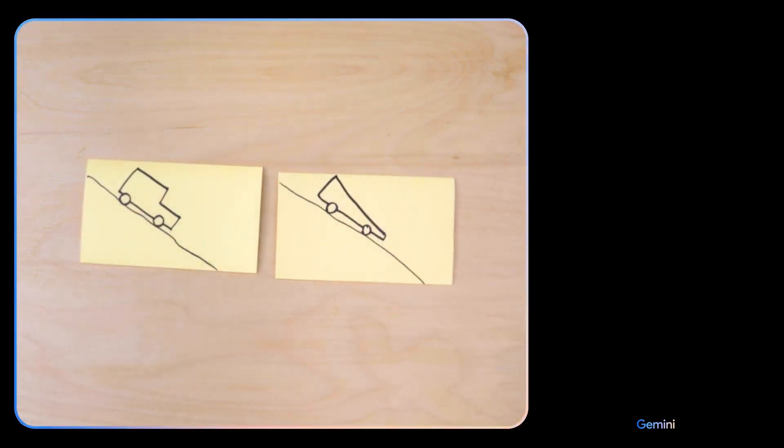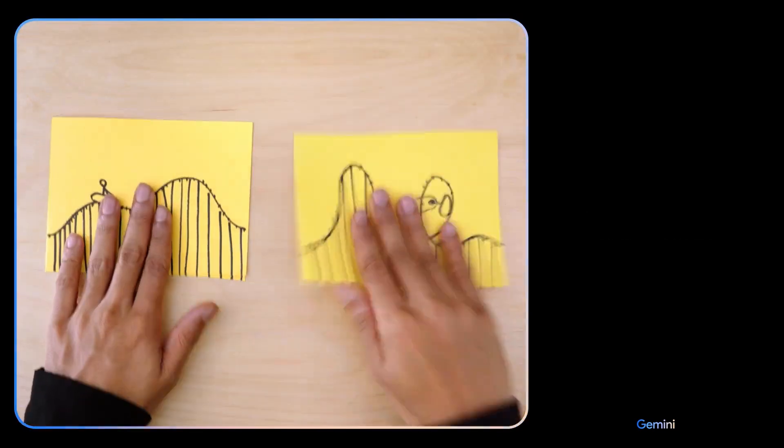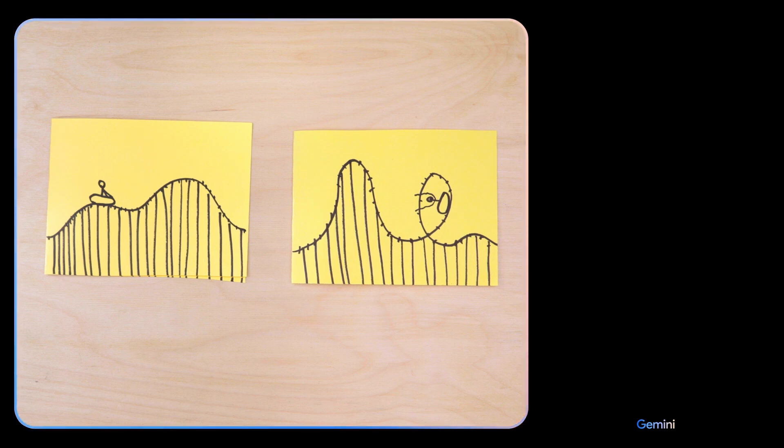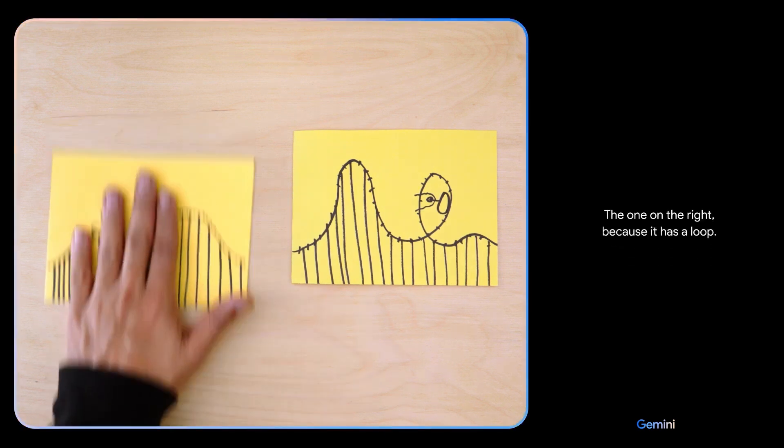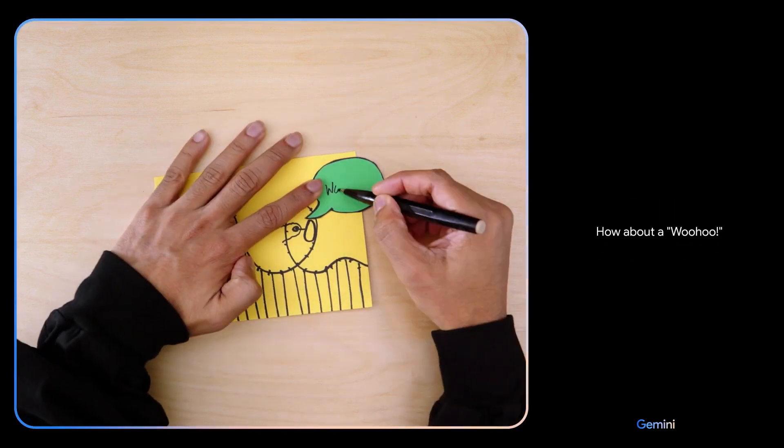Based on their design, which of these would go faster? The car on the right would be faster. It is more aerodynamic. Which looks more fun? The one on the right, because it has a loop. What do you think this person might be saying? How about a woohoo? Oh, I love that.